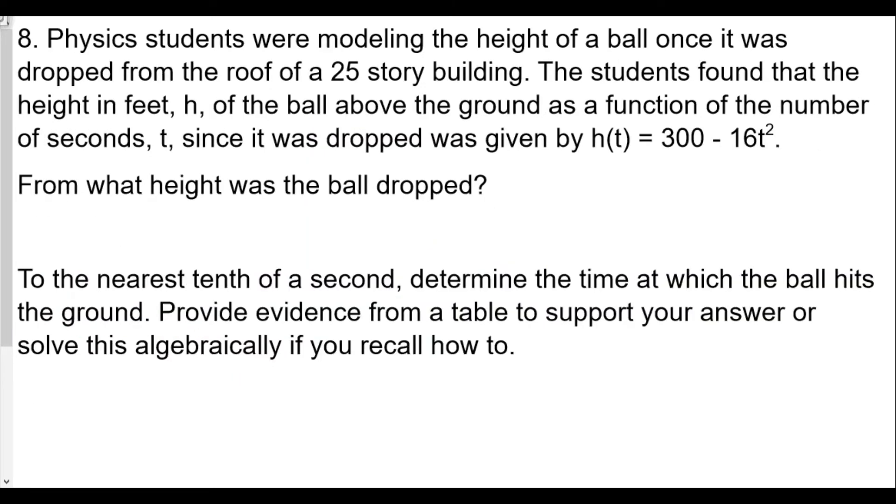Problem 8: Physics students were modeling the height of a ball once it was dropped from the roof of a 25-story building. The students found that the height in feet, h, of the ball above the ground is a function of the number of seconds t since it was dropped, given by h(t) = 300 - 16t². From what height was the ball dropped? Before I dropped the ball, the time would be t = 0.